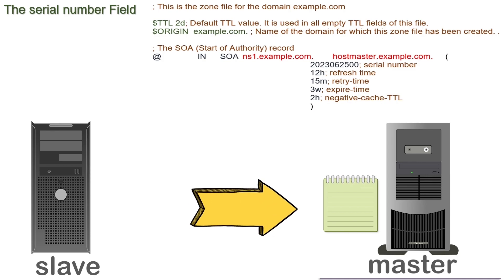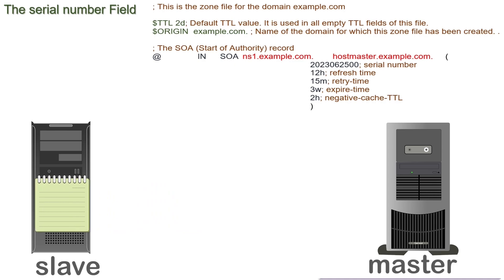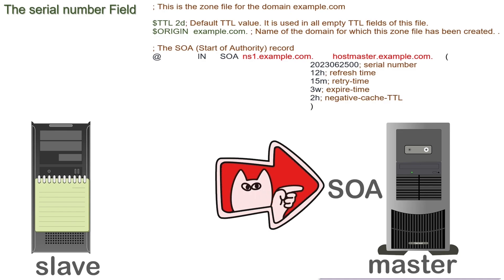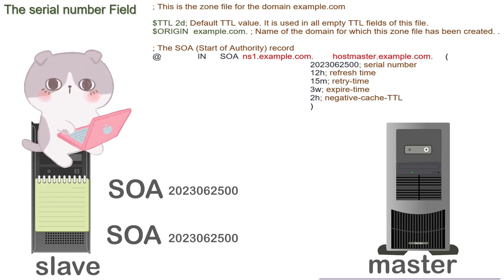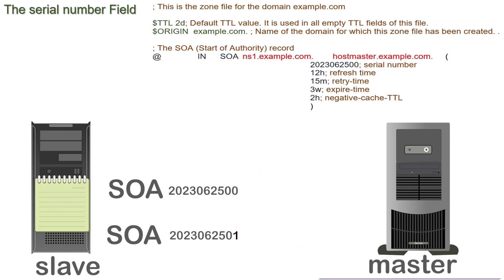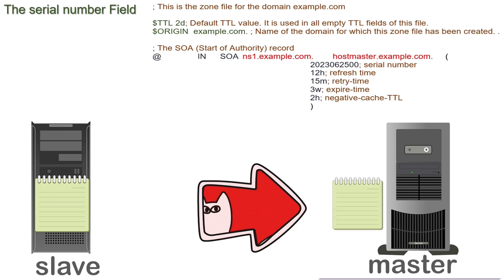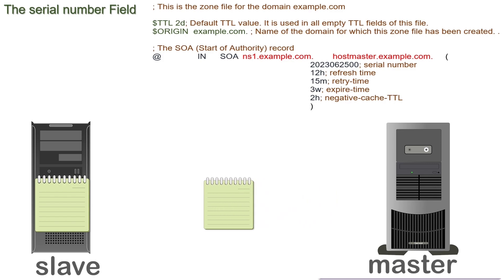The first time, the slave makes a complete zone transfer request and the master transfers the zone file. The slave saves the received zone file. The next time, instead of a complete zone transfer request, the slave makes a Start of Authority record transfer request. The master transfers the SOA record, and the slave compares the received serial number with the locally saved zone file's serial number. If both numbers are the same, it assumes the master's zone file has not changed and keeps using the local copy. If both numbers are different, it sends a complete zone transfer request. The slave uses the SOA serial number to detect changes in the master's zone file.